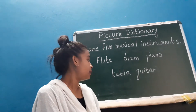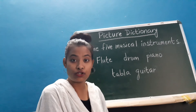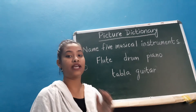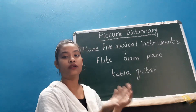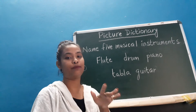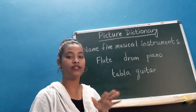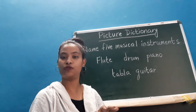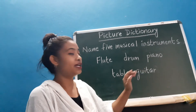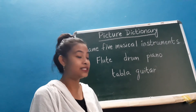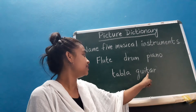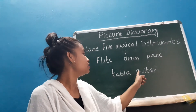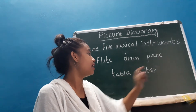Tabla is basically used in our country, in India. It has two round shaped ones and a musician taps on it, and beautiful music comes from it. Now the last one is guitar: G-U-I-T-A-R, guitar. I repeat: G-U-I-T-A-R, guitar.